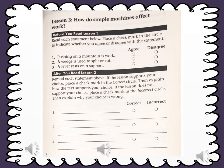Number 1. Pushing on a mountain is work. When you push a mountain, it's a force, but the mountain cannot move. When you give a force and the object cannot move, then the work is not done.